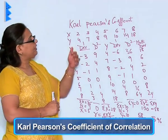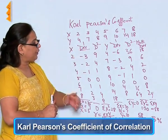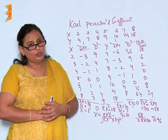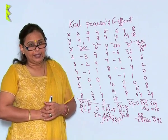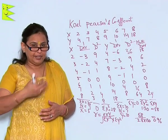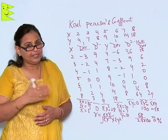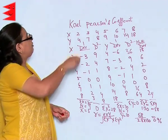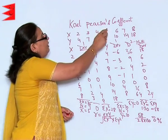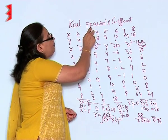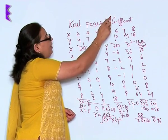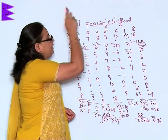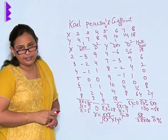First of all, we are going to do it the way it should be and then I will explain the merits and the demerits. The Karl Pearson's coefficient is written as this — that is the symbol.